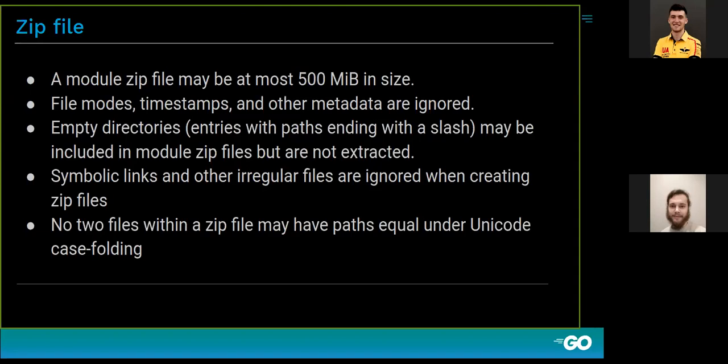If for some reason you rely on specific types of files, be aware that no symbolic links, no empty directories, no broadcast or network files, or irregular files are allowed. Not even VCS metadata — those files will be rewritten. Remember that your module is pushed into a zip archive, which doesn't behave exactly like your main file system, especially since Go modules must be cross-platform — compatible with Windows, Unix, and other operating systems.